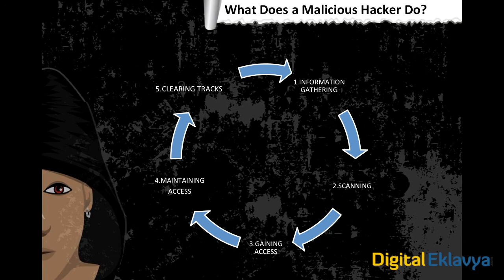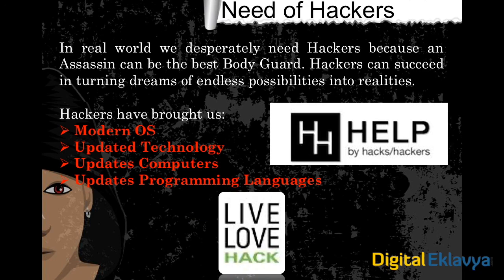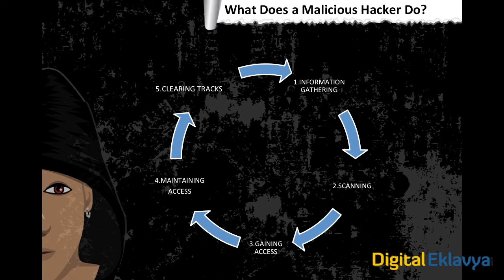For a malicious hacker, every process is the same except: they will not report the bug. Instead, in the fourth stage, they maintain access by creating backdoors on your system for future access to your data. The fifth step is clearing tracks — just like covering evidence after a crime. They clear log files from the system or server, since logs are digital evidence left behind.